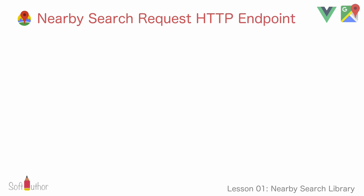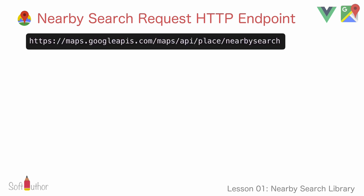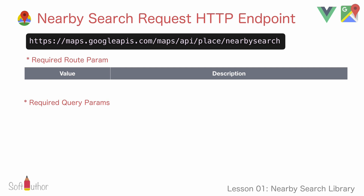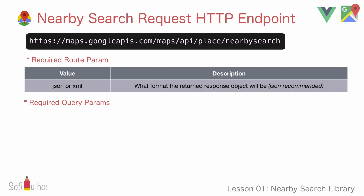Let's take a look at the parameters we need in order to get places from the Nearby Search request. The URL is pretty straightforward: it has https://maps.googleapis.com/maps/api and the API we want to use, which is place/nearbysearch. It has one required route parameter which could be either JSON or XML — this will determine what format the output response object will be.